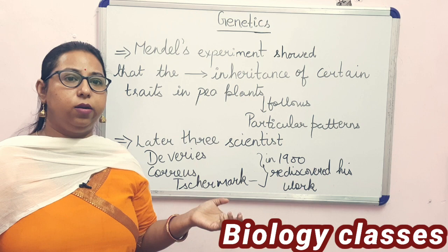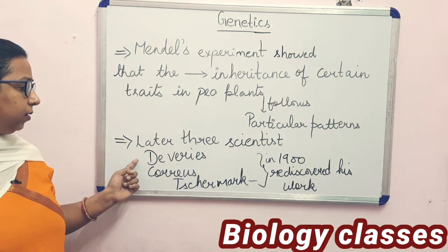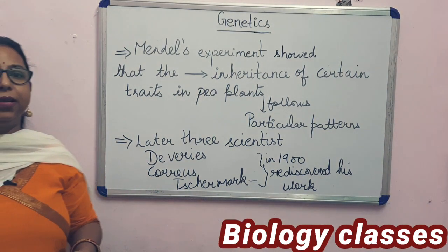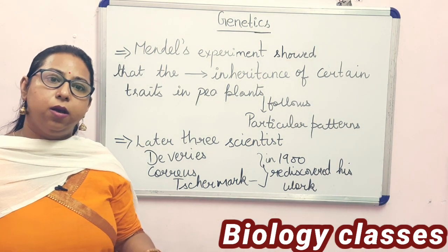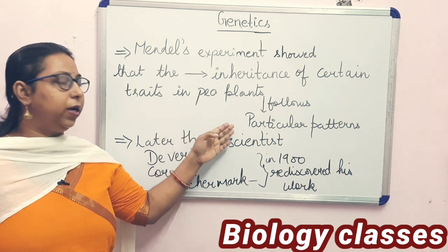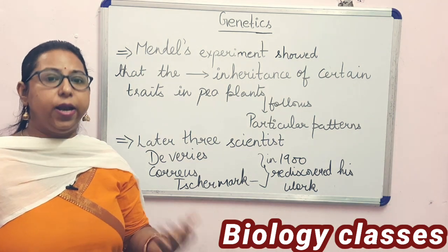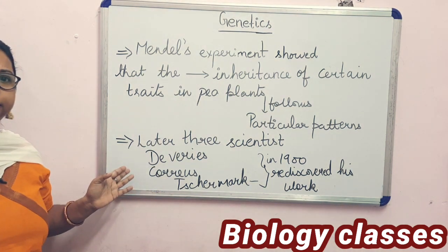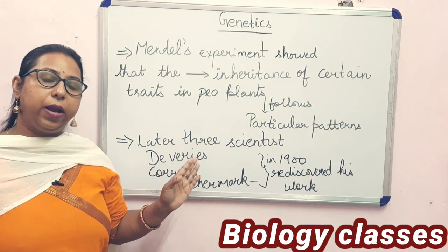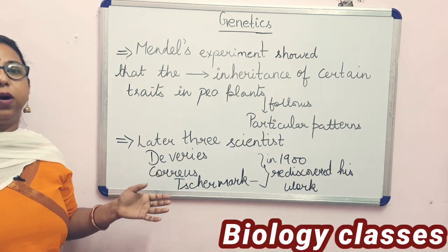The recognition he received came through three scientists: De Vries, Correns, and Tschermak. In 1900, these three scientists independently rediscovered Mendel's work and found that there are patterns of inheritance passed on to the next generation. However, this work had been unknown while Mendel was alive, and it was only after his death that his work was recognized.